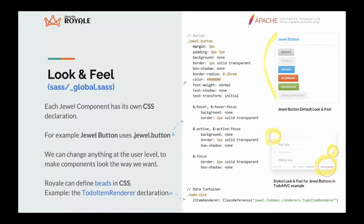When we compile these SASS rules they take precedence over the ones in the framework. So when we create a border definition, the compiler uses our definition instead of the one in GWL — that's how we override framework defaults. We can also use CSS to add beads to components via CSS class rules.